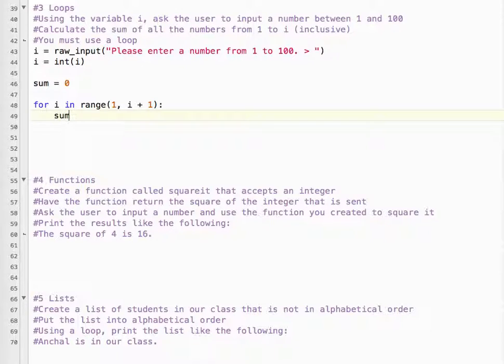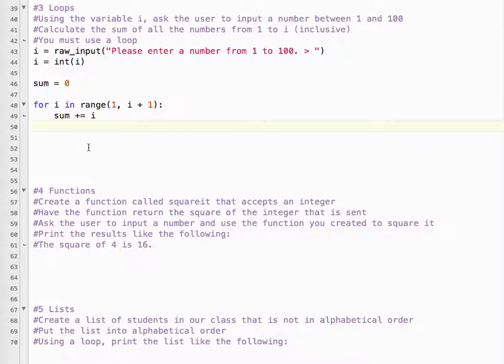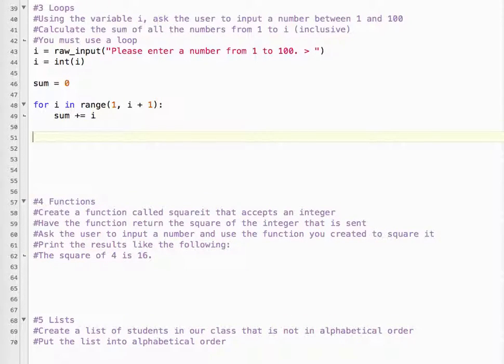So what we've got to do is sum plus equals i. So each time through the loop, it's going to add i to the sum. So 1, then it'll add 2, which is 3. It'll add 3, which is 6. 4, which makes 10. 5, which makes 15. So then we want to print the sum.